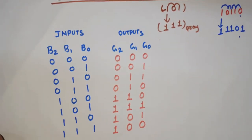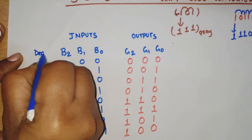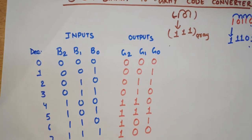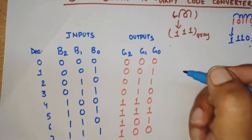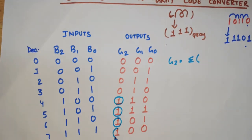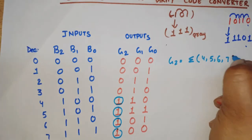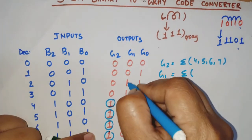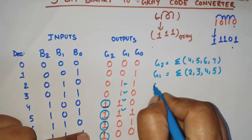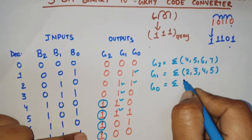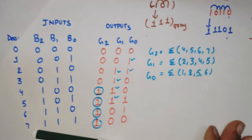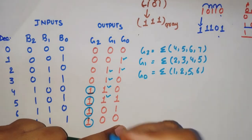For easily finding the functions, I'll write the decimal equivalents 0 through 7. G2 equals summation of minterms 4, 5, 6, 7. G1 equals summation of minterms 2, 3, 4, 5. G0 equals summation of minterms 1, 2, 5, 6. Now we need to find the simplified equations, so we'll draw the K-map of three variables.